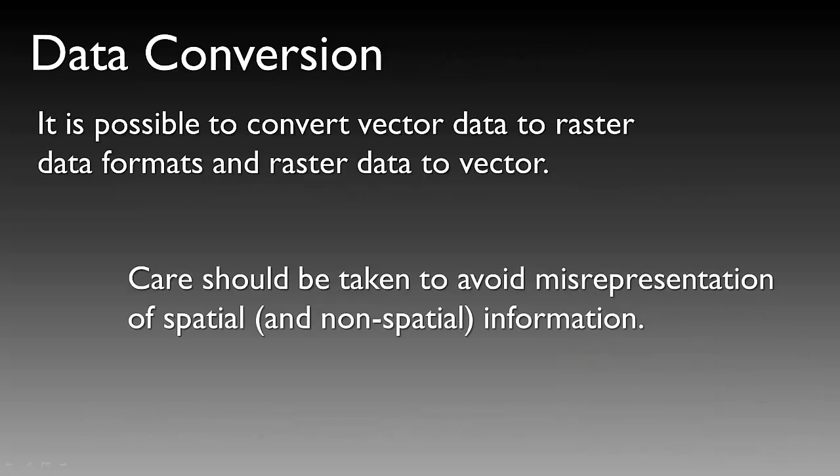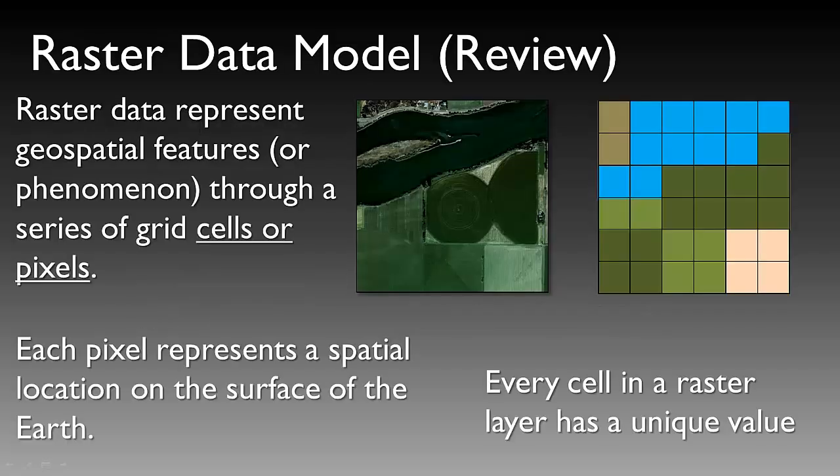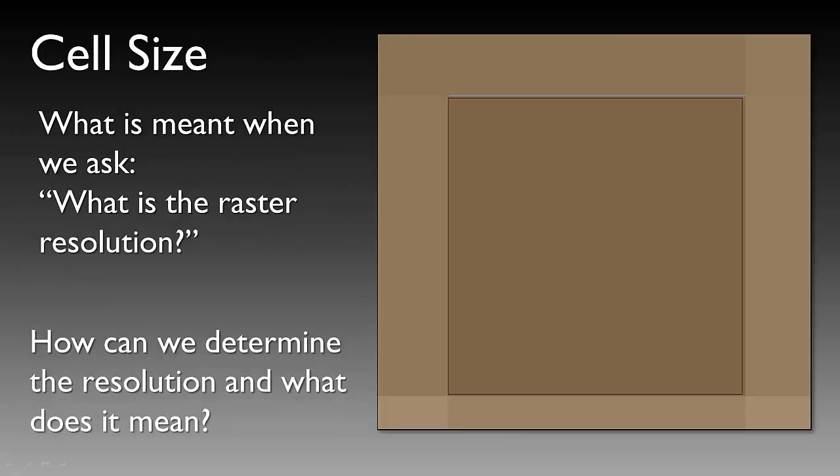Moving on and switching gears, discussion about data conversion is important when using GIS. It is possible to convert vector data to raster data formats and raster data to vector data. Care should be taken to avoid misrepresentation of spatial and non-spatial information when conducting these data conversions. A discussion of data conversion requires us to review raster data models. Remember that raster data represent geospatial features or phenomena through a series of grid cells or pixels. Each pixel represents a spatial location on the surface of the Earth, and every cell or pixel on the raster has a unique value. Cell size becomes an issue when talking about data conversion.